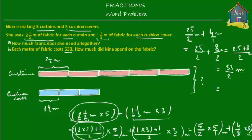So 33 upon two meters is how much fabric she needs altogether to make five curtains and three cushion covers. The answer is correct but 33 upon two is an improper fraction — for it to make more sense we should convert it back to a mixed number format. If any of these conversions between mixed numbers and improper fractions are not clear to you, I recommend you watch some of the concept videos I've done previously on fractions — covering conversions, addition, subtraction, multiplication, and division.